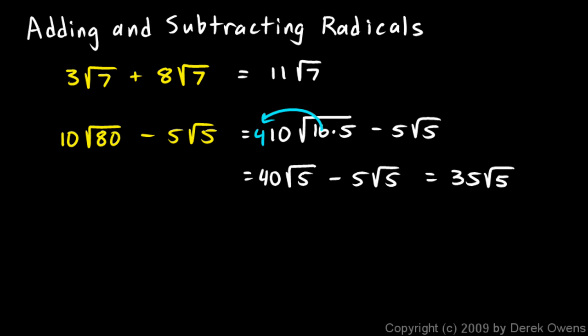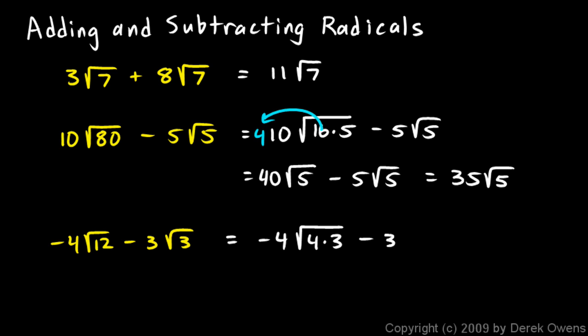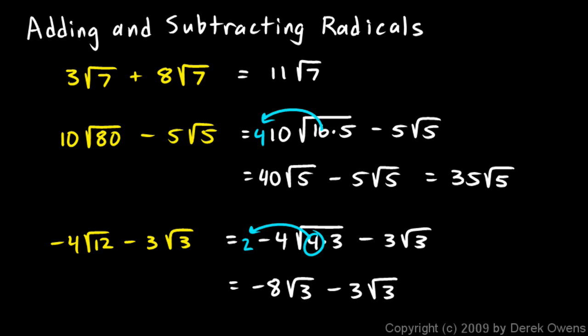The next one: negative 4 times the square root of 12 minus 3 times the square root of 3. I'll solve this by simplifying the square root of 12. Instead of the 12 under the radical, I'll write 4 times 3. We see this 4 comes out as a 2, and that's 2 times negative 4 right there out front. So this becomes negative 8 times the square root of 3 minus 3 times the square root of 3. Negative 8 of these minus 3 of these is negative 8 minus 3 times the square root of 3, which is negative 11 times the square root of 3.